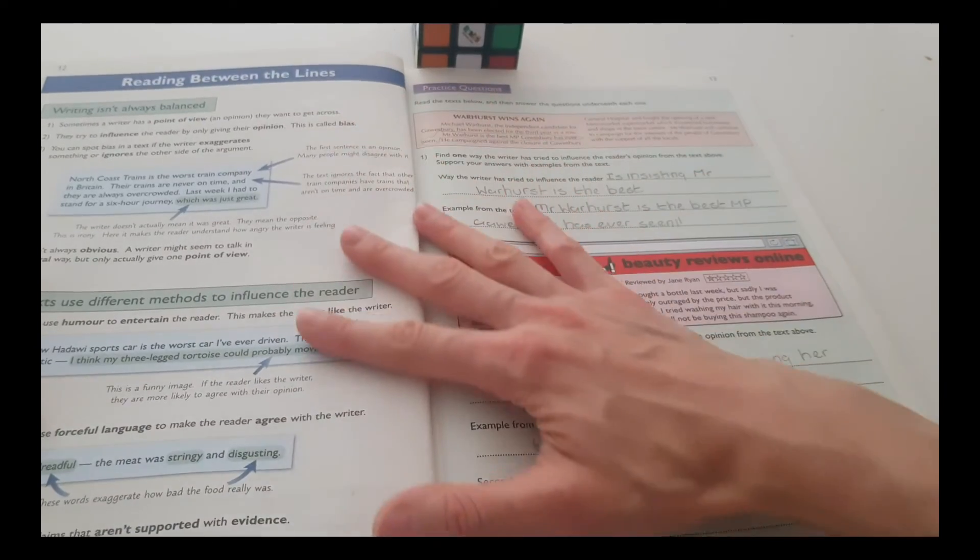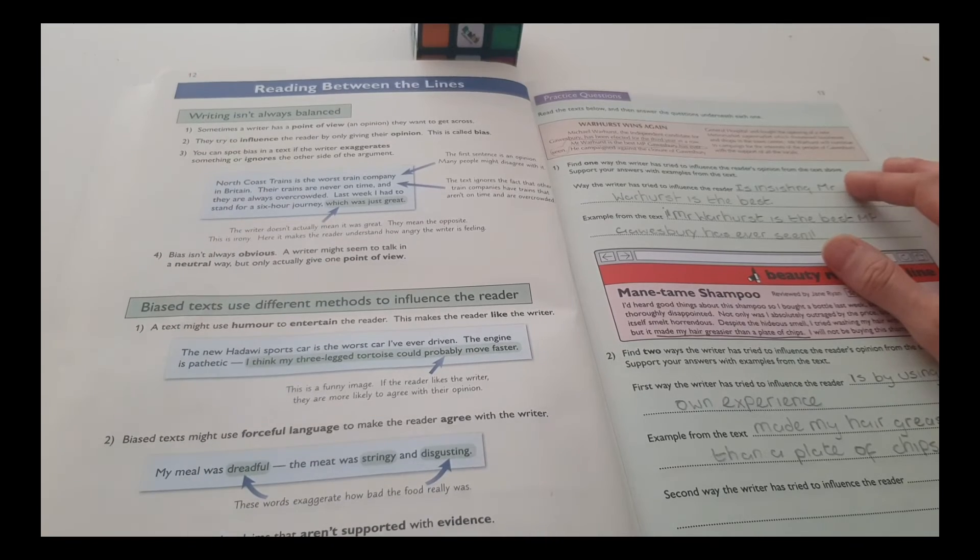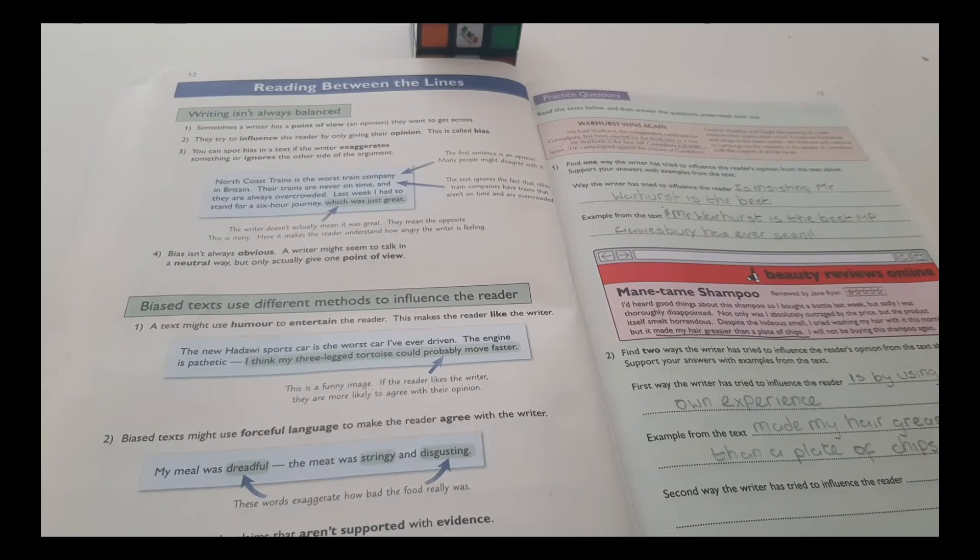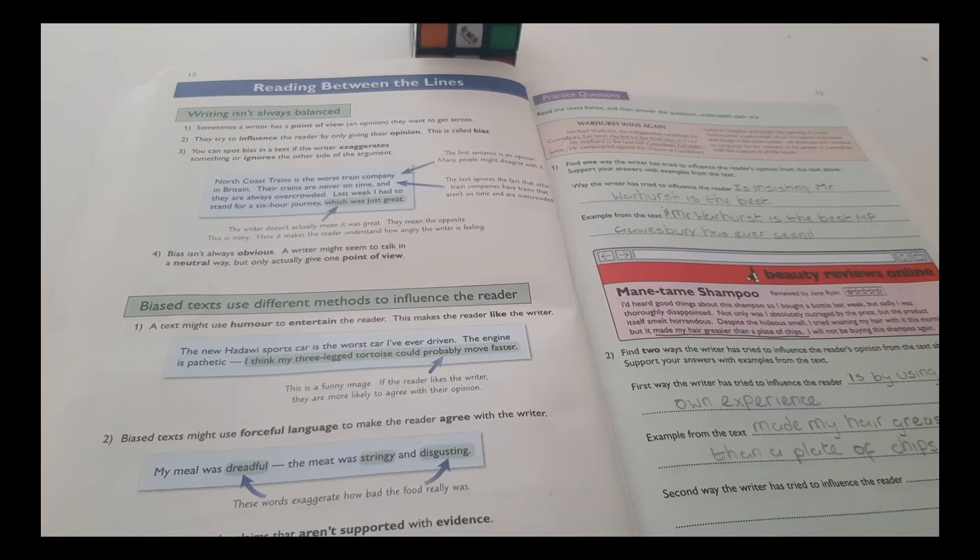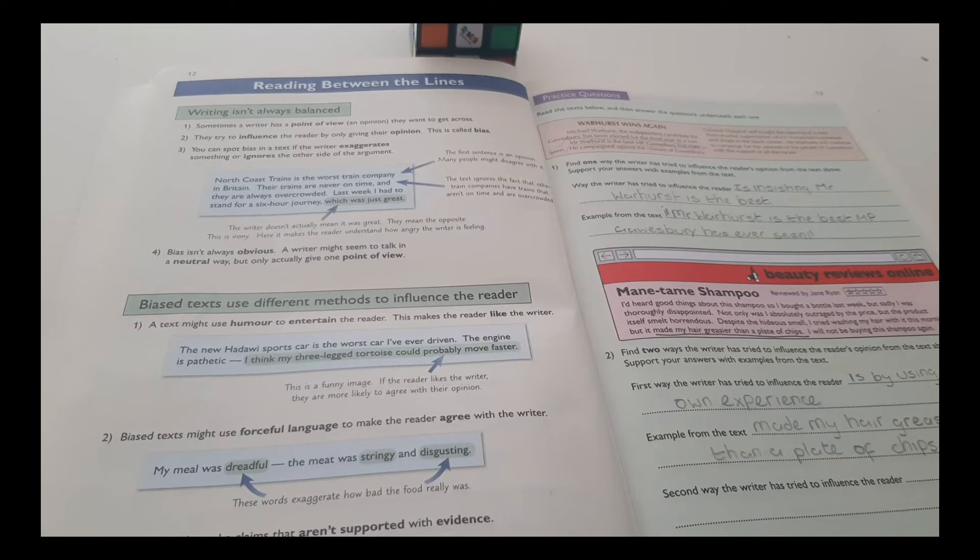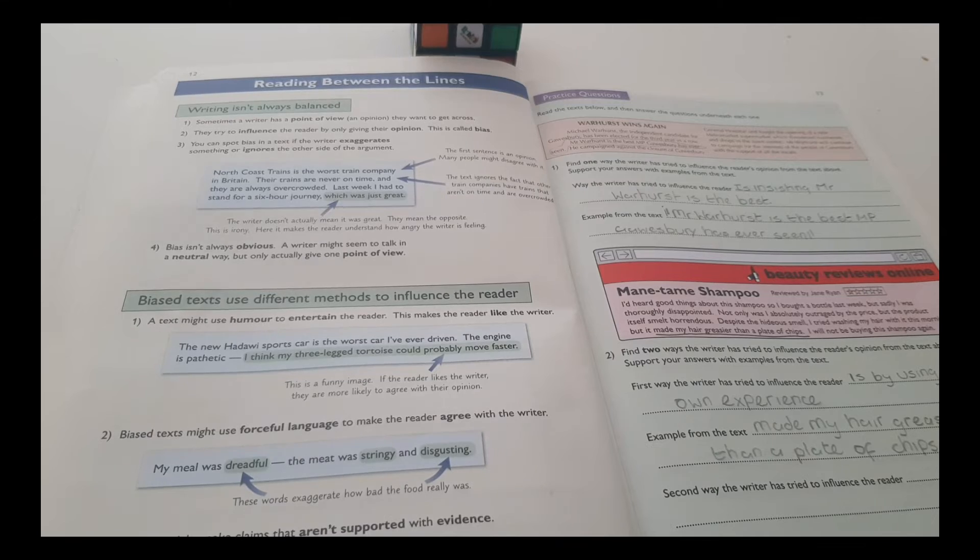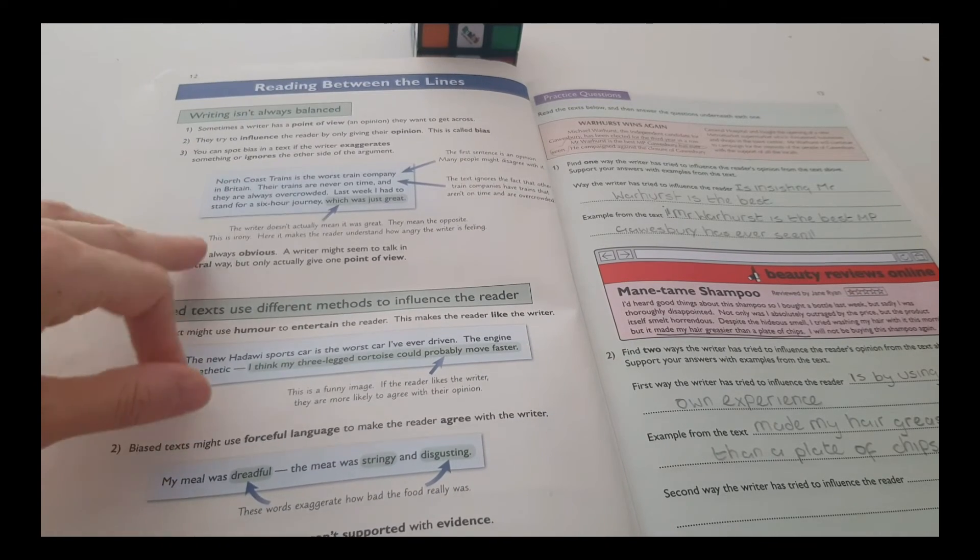Reading between the lines. Writing isn't always balanced. Sometimes, a writer has a point of view, an opinion they want to get across. They try to influence the reader by only giving their opinion. This is called bias. You can spot bias in a text if the writer exaggerates sometimes or ignores the other side of the argument.